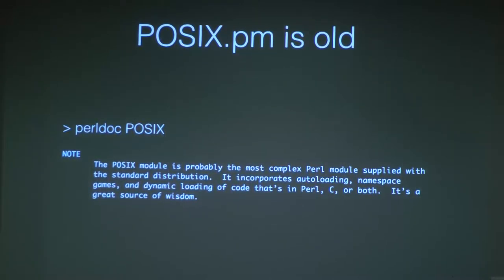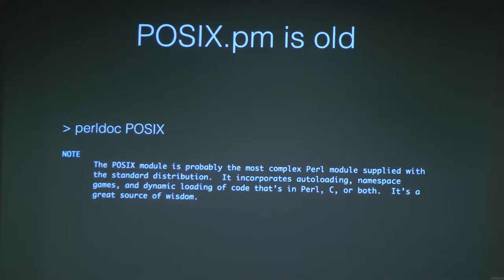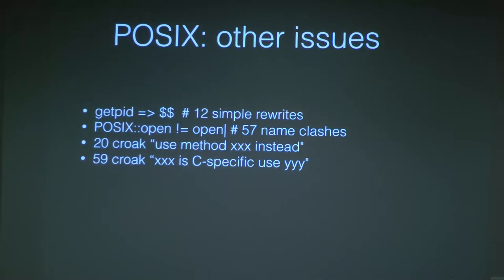POSIX is as old as Perl itself. The official Perl doc on POSIX says it's 'the most complex Perl module supplied with the standard distributions.' It's also awkward: for SELECT, Perl has two functions, and there are many croaks in the code saying 'use this method instead of this one.' It's not the best API to work with.